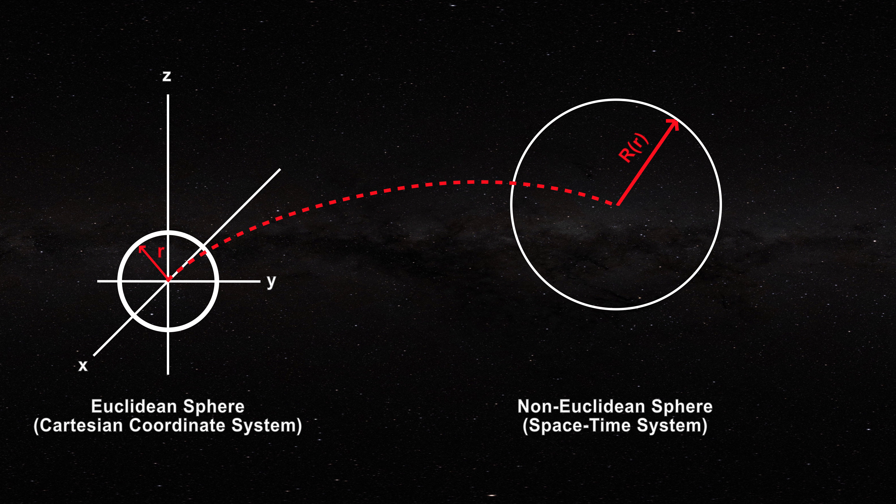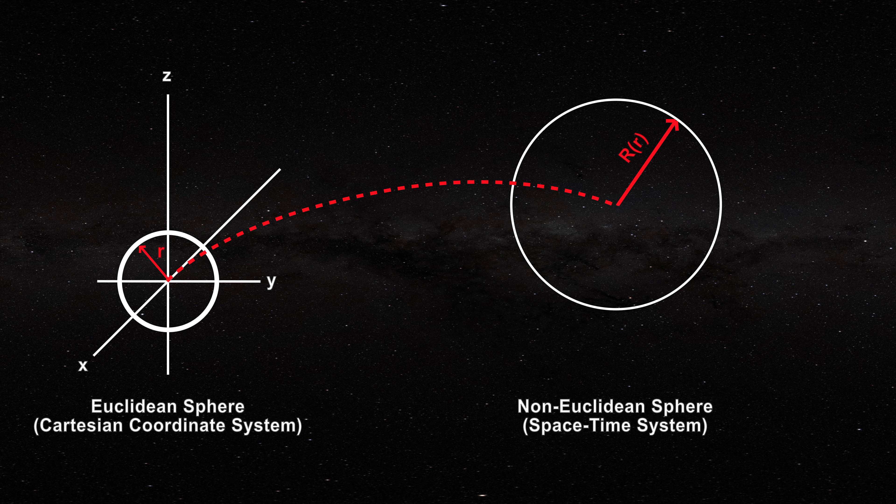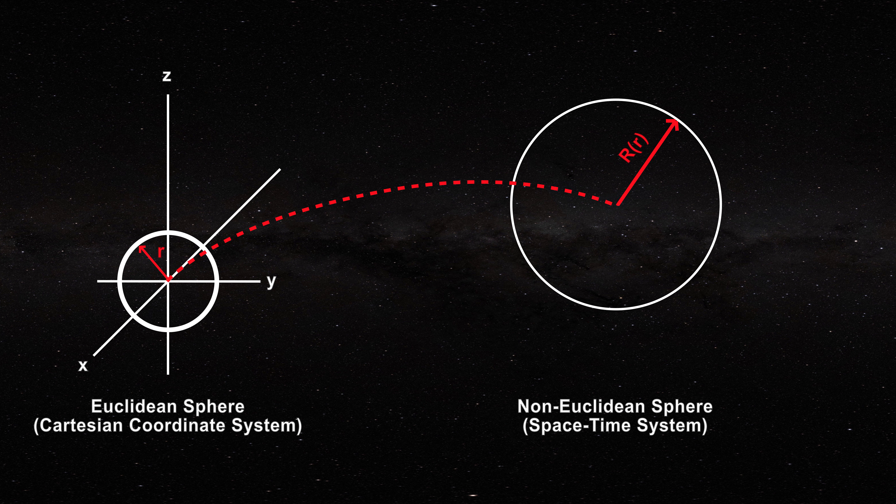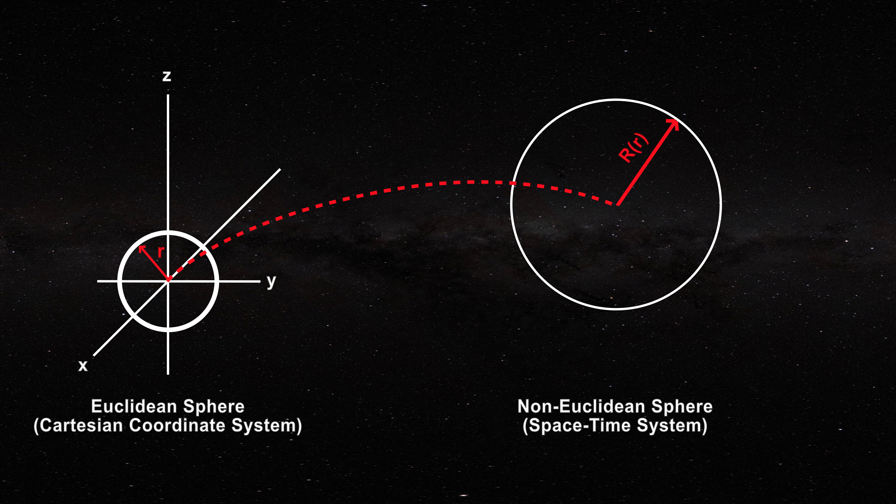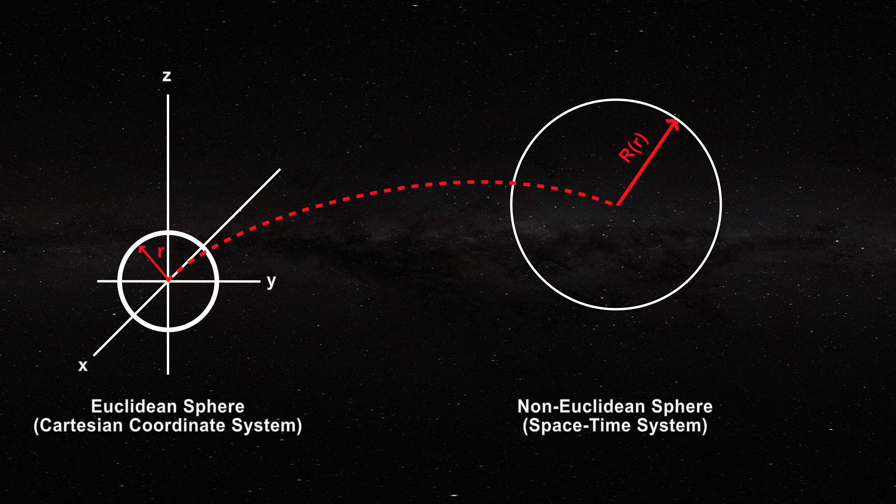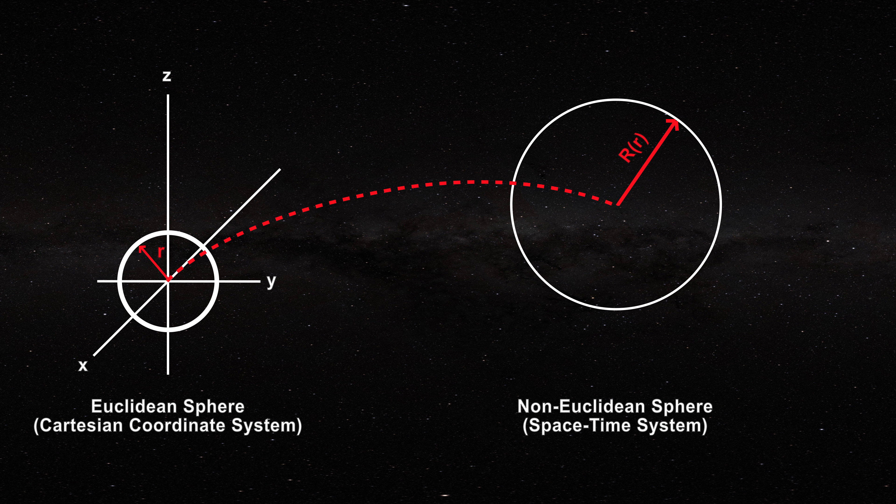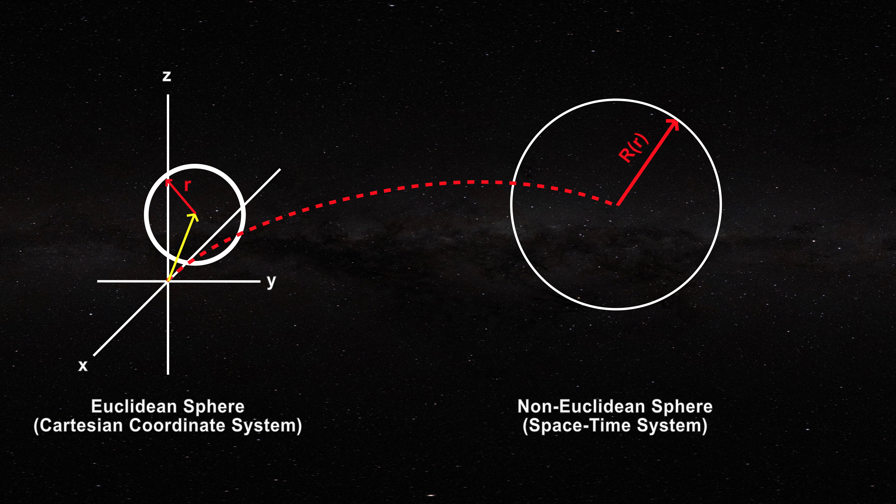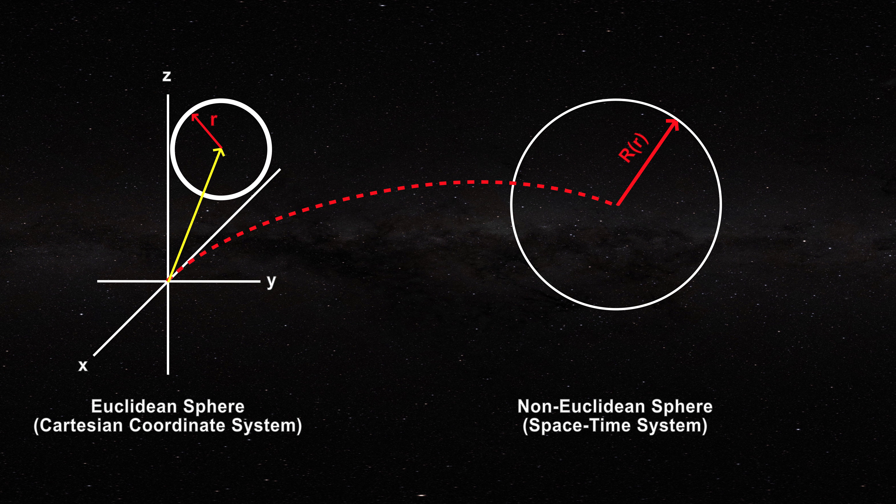The black hole non-Euclidean sphere is obtained through complex mathematical manipulations from the foundation Euclidean sphere. Cosmologists unwittingly introduce a latent translation of the Euclidean sphere so that its center is no longer at the origin of its coordinate system.